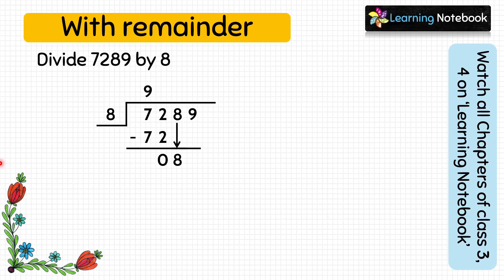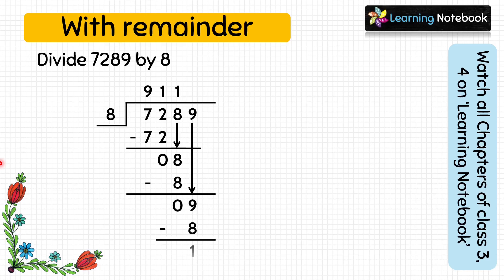Copy the next digit 8. 8 into 1 equals 8, and 8 minus 8 equals 0. Next, copy the last digit 9. 8 into 1 equals 8, and 9 minus 8 equals 1. We stop here as we cannot divide further. Therefore we write the answer as quotient equals 91 and remainder equals 1.